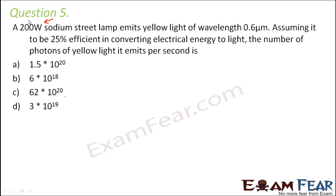The input power given here is 200 W — that is the power of the lamp. Now what is our output power? The output is what the lamp emits. The lamp emits yellow light of wavelength 0.6 micrometers. So the energy emitted would be equal to H-nu, or which can be written as Hc divided by lambda. So this would be the total energy that is emitted.